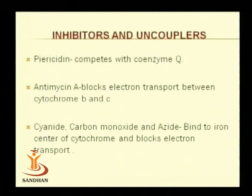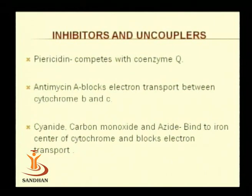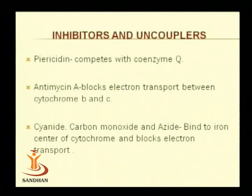To understand energy generation properly, we should know about inhibitors and uncouplers. A number of inhibitors and uncouplers have been studied which affect the electron transport chain in one way or another. The first is pyricidine, which competes with coenzyme Q. After coenzyme Q, the flow of electrons is stopped, so total ATP generation will be less.